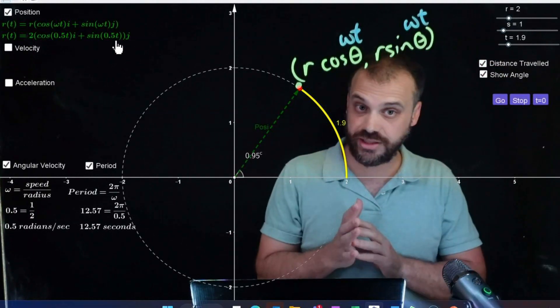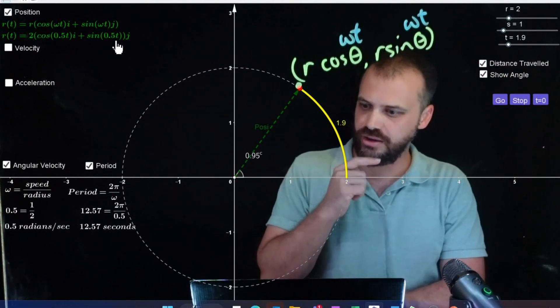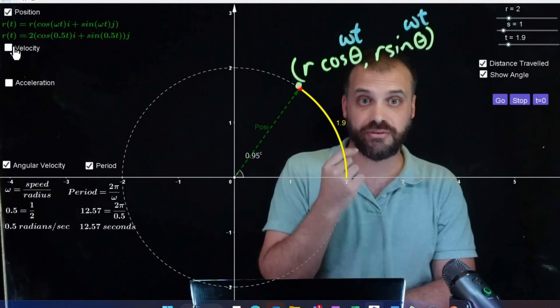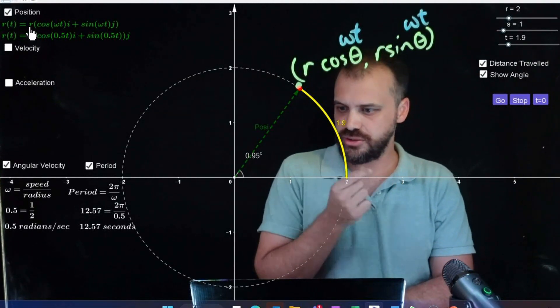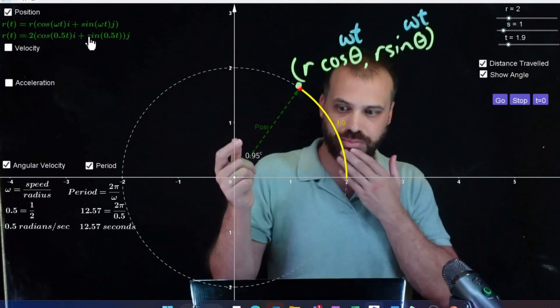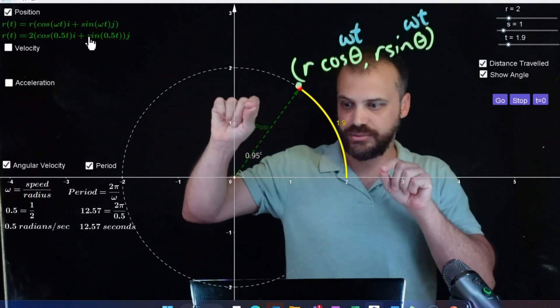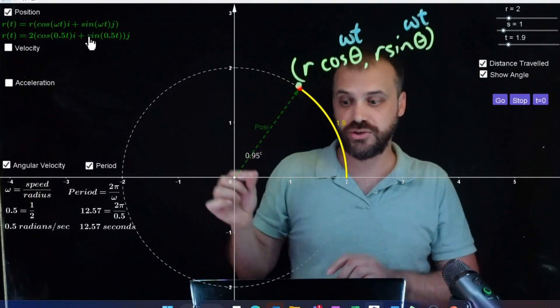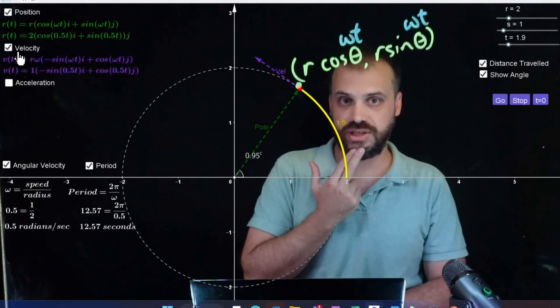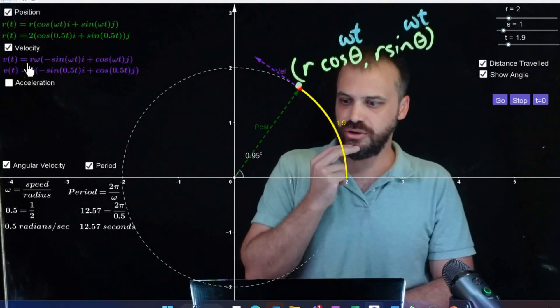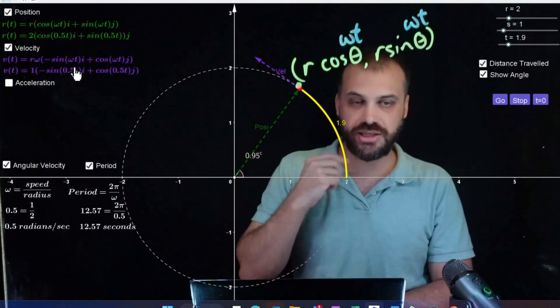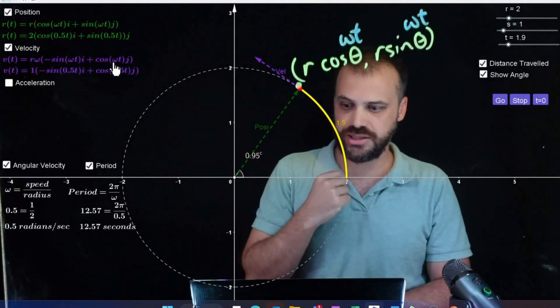Now this is vector calculus. And so if we were to find the derivative of our position vector, we have our velocity vector. So expanding this: 2 cos(0.5t), 2 sin(0.5t), so the 2's in both of them. And then we find the derivative, the i and the j components, we get this. We get rω on the outside and then -sin(ωt)i + cos(ωt)j.